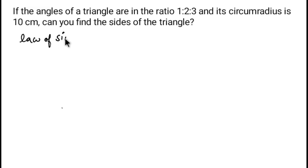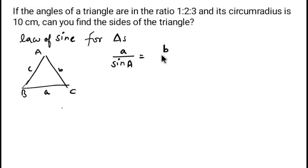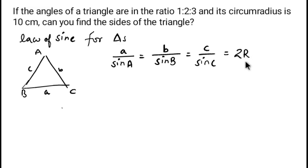For a triangle with sides a, b, c, the Law of Sines states: a over sine of the opposite angle (sine A) equals b over sine of the opposite angle (sine B), equals c over sine C, and this equals 2R. Here, R is the circumradius.